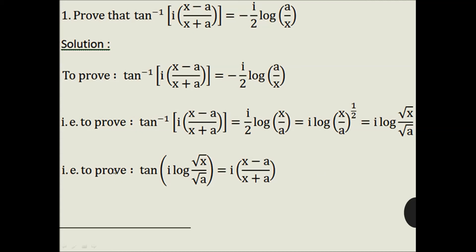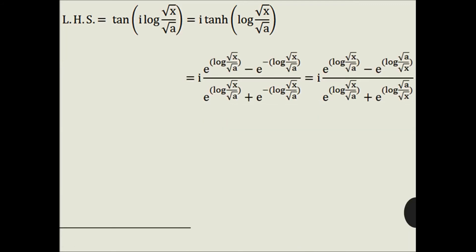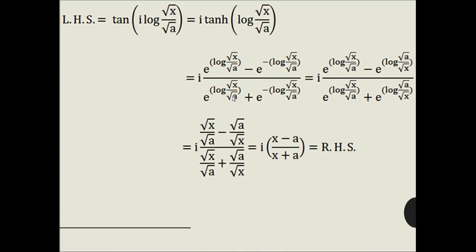Now LHS = tan(i · log(√x / √a)). We know that tan(iθ) = i · tanh θ, where θ = log(√x / √a). Then we use the formula tanh θ = (e^θ − e^(−θ)) / (e^θ + e^(−θ)). We know e^(log(√x/√a)) = √x/√a, and similarly e^(log(√a/√x)) = √a/√x. By cross multiplication we get the next step.